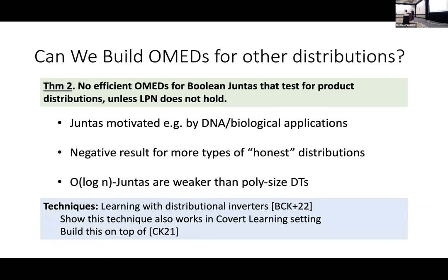The negative result covers more types of honest distributions — product distributions — with the uniform distribution being just one special case. One drawback is that juntas are a natural subclass of polynomial-size decision trees. To finish, I'll mention the technique used: learning with distributional inverters, which appeared earlier last year, reduces learning under a fancy distribution to learning under the uniform distribution. In our work, we port this technique to the covert learning setting with security guarantees and build on the prior algorithm to obtain this negative result. Thank you.